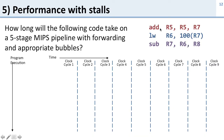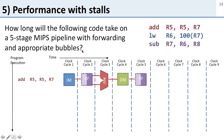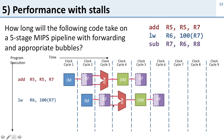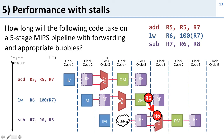Now let's look at performance with stalls. With no forwarding, the load word will stall between instructions — we analyze this by inserting bubbles in the pipeline. The load word only has data available at the end of the memory stage, so the subtraction can use that data in its execute stage earliest in the next cycle. This means we need a bubble in the pipeline — we must delay the subtraction instruction by one cycle.